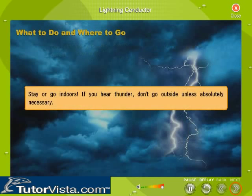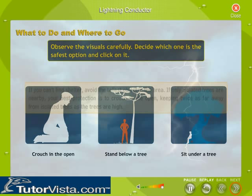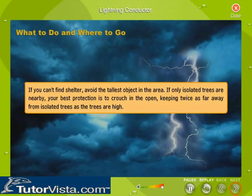Stay or go indoors. If you hear thunder, don't go outside unless absolutely necessary. If you can't find shelter, avoid the tallest object in the area. If only isolated trees are nearby, your best protection is to crouch in the open, keeping twice as far away from isolated trees as the trees are high.